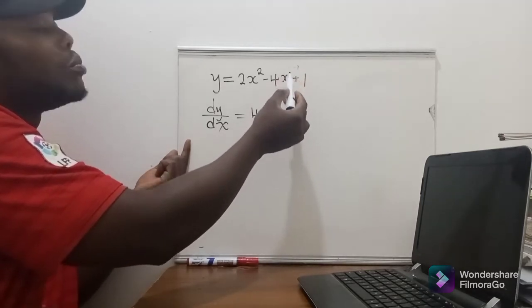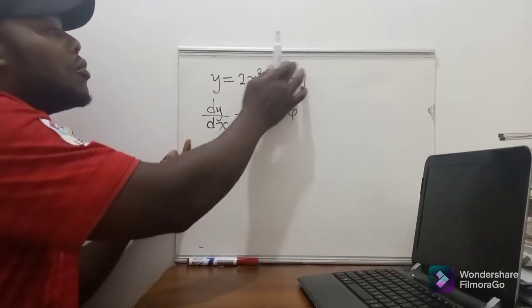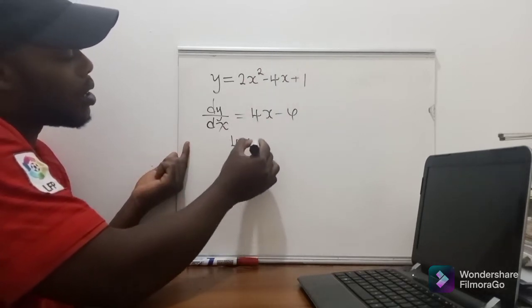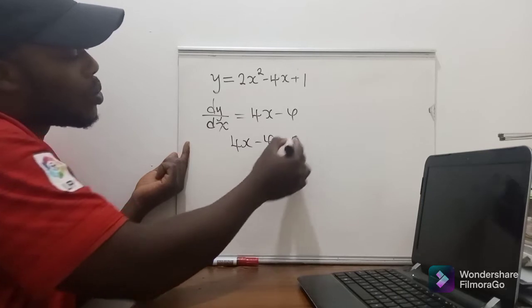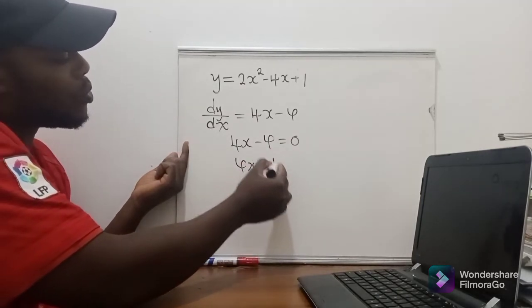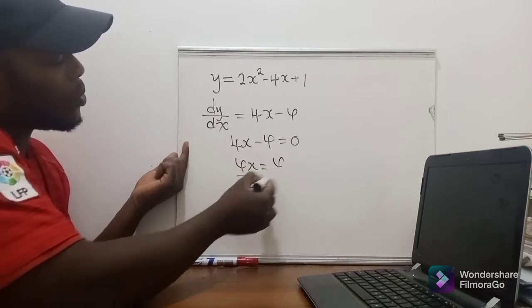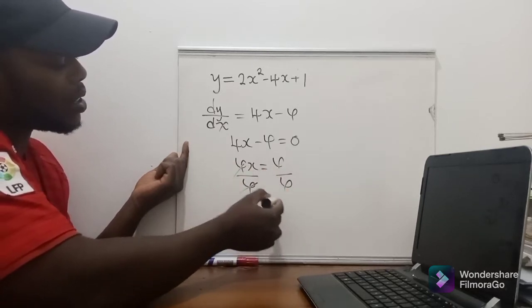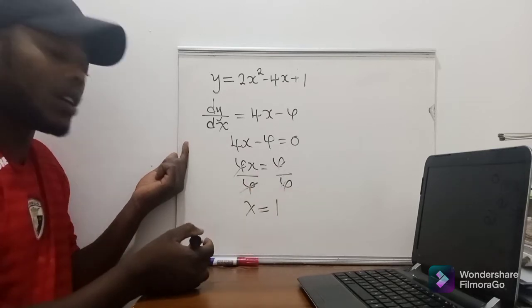So now at this point you equate, you say 4x minus 4 is equal to 0. So 4x is equal to 4, you divide by 4, you find that the x value at the turning point is 1.